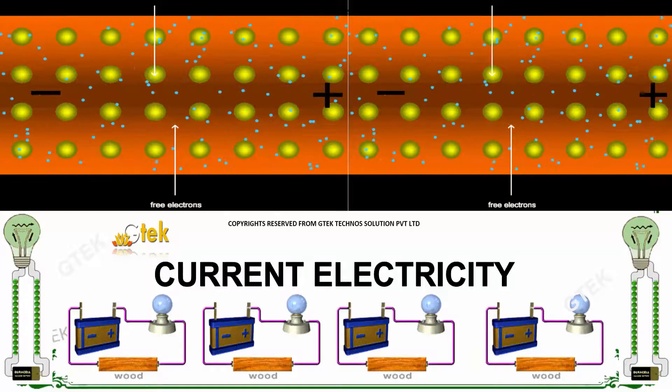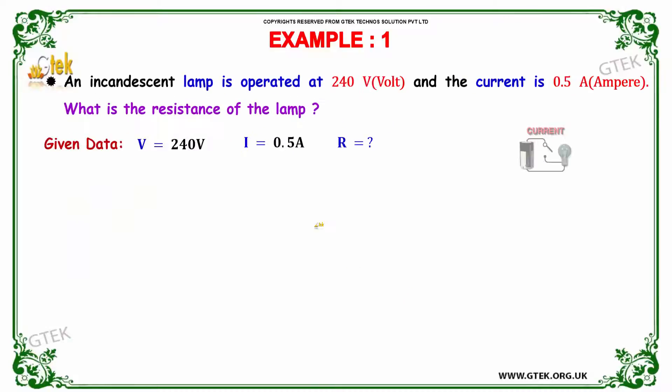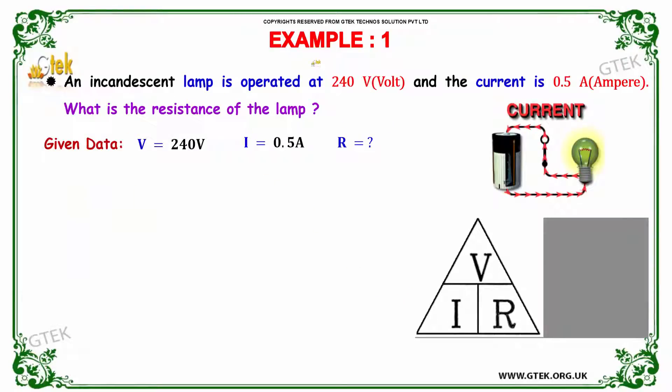Let's look into the problems in current electricity. Here is example 1. An incandescent lamp is operated at 240 volt and the current is almost 0.5 ampere. So what is the resistance of the lamp? That's the question.